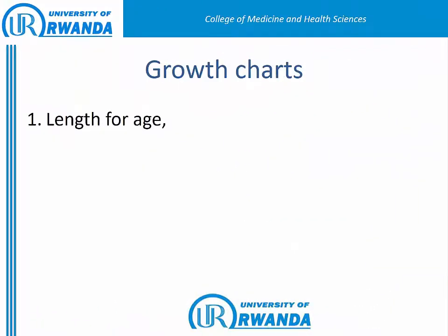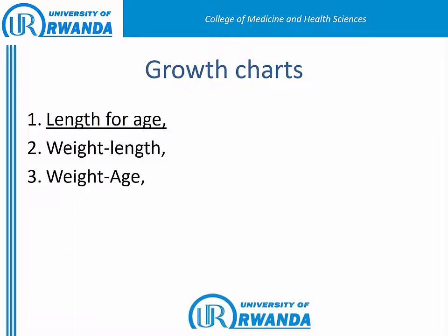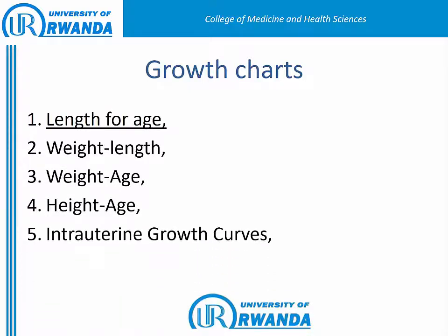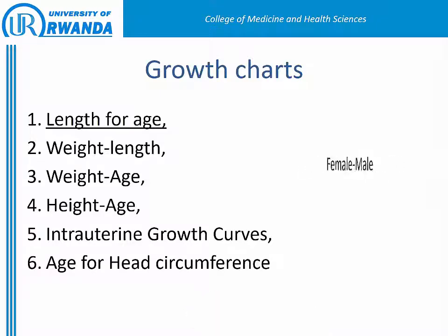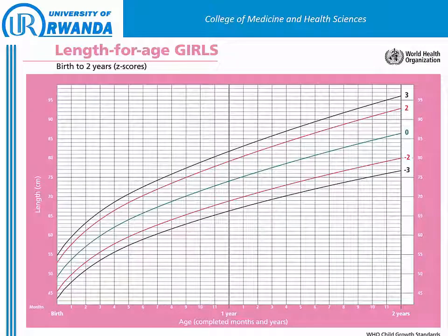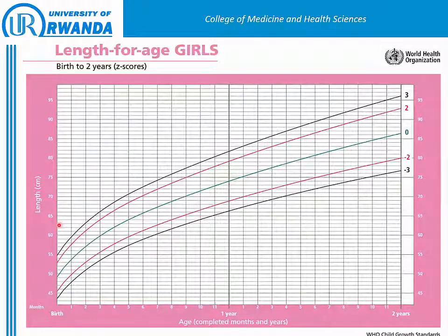We have about six growth charts. Today we will demonstrate how to plot the length-for-age chart for one month for a term female infant. You are requested to work in pairs on the last five growth charts. Remember, growth charts are different by gender — female and male. Our term female infant is one month old. After measuring her length, we found she is 54 centimeters.